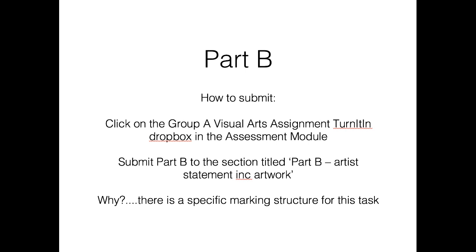You'll see there are two sections — Part A and Part B. For Part B, you need to submit to the section called Part B: Artist Statement, including Artwork. Part B goes into Part B because there is a very specific marking structure for each. If you put your Part B into the Part A section, it won't be marked correctly. I spent significant time at the end of the first iteration downloading, deleting, and re-uploading assignments — that is not my job. So there is no excuse for getting it wrong: make sure you put Part B into the Part B component.